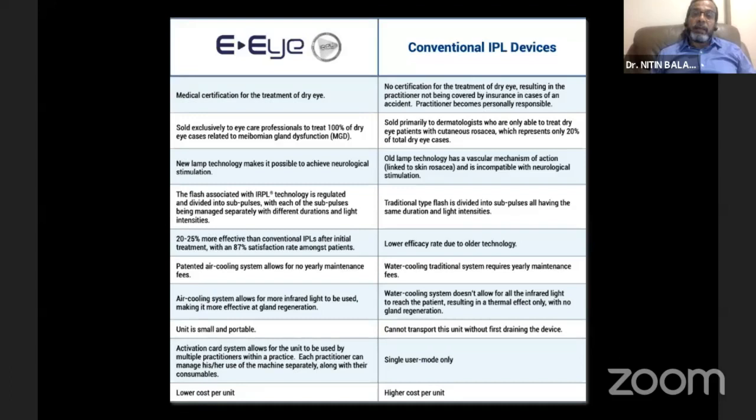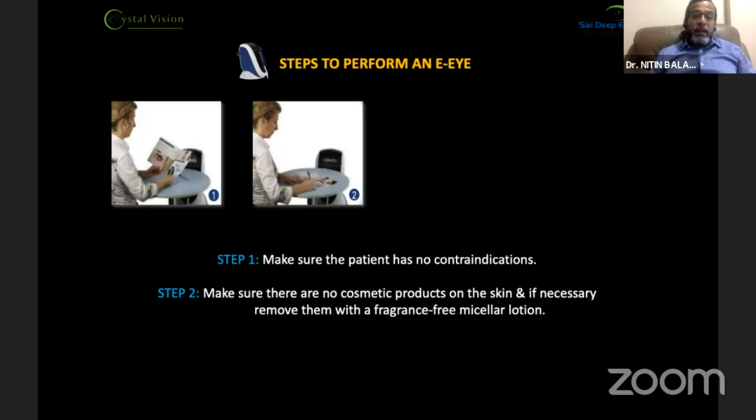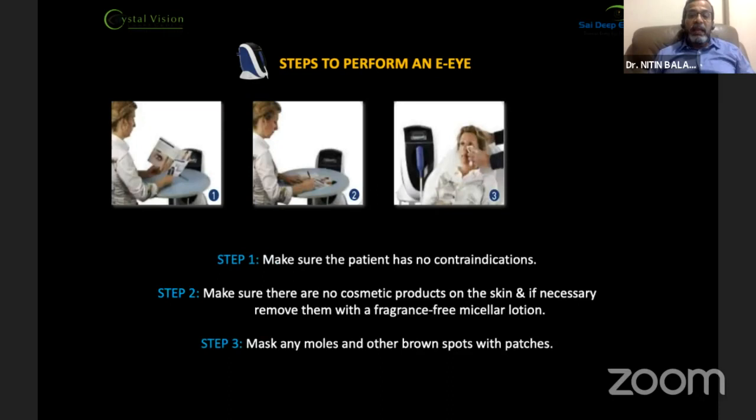The steps to perform an EI begin with checking for contraindications. These include pregnant patients, patients with very dark skin, patients with skin disorders, tattoos around the eye, or permanent eye makeup. Ensure there are no cosmetic products around the eye before the procedure; if present, they should be cleaned off. All moles or dark pigmented spots in the treatment area should be covered with the patches supplied with the unit.